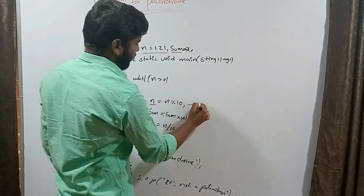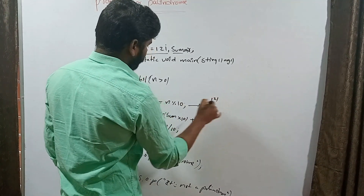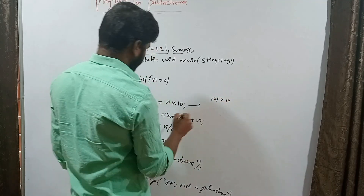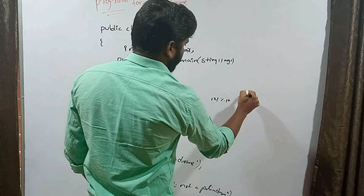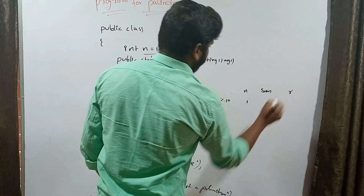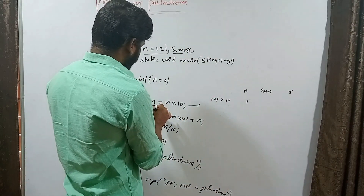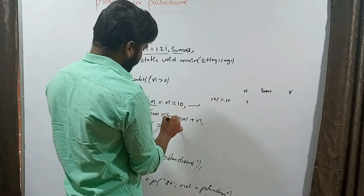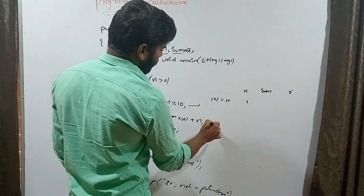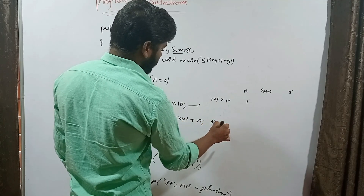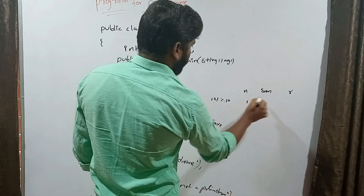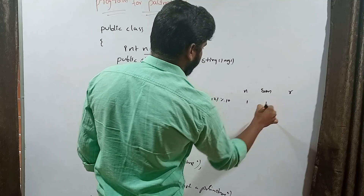For the dry run with number 121: initially sum equals zero. First iteration — remainder is 121 modulo 10 equals 1; sum equals zero into 10 plus 1 equals 1; n becomes 121 divided by 10 equals 12.